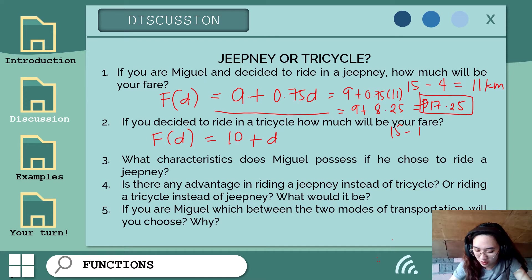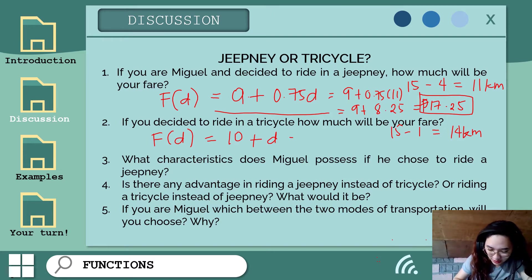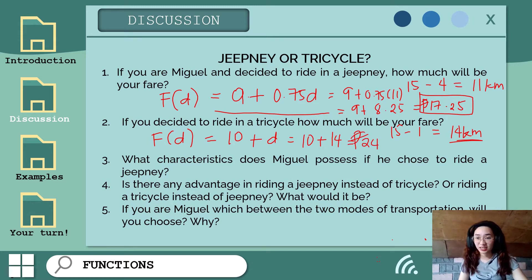Since 15 kilometers total and the first kilometer is 10 pesos, we subtract that. So 14 kilometers will be added to the 10 pesos, charged at 1 peso per kilometer. So F(d) = 10 + 14, which equals 24 pesos. That's the fare in tricycle.